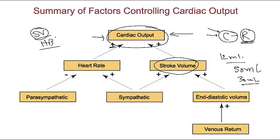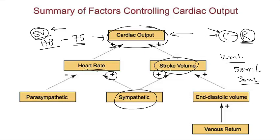Heart rate is the number of times the heart beats per minute, with an average of 75 times per minute. What we primarily regulate is the volume of blood pumped out of the ventricles. The sympathetic nervous system plays a vital role here — it provides a positive effect, increasing both heart rate and stroke volume by allowing a higher amount of contraction, pumping more blood and also increasing heart rate slightly.